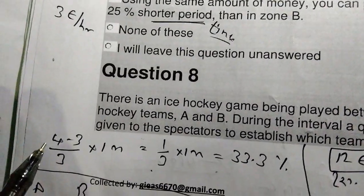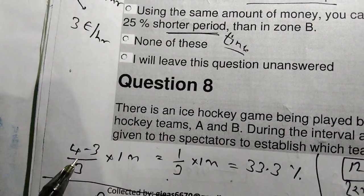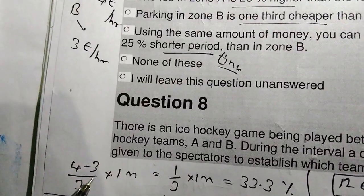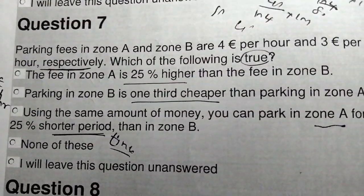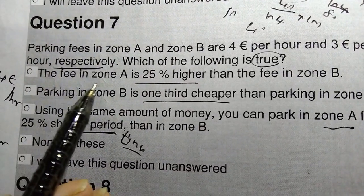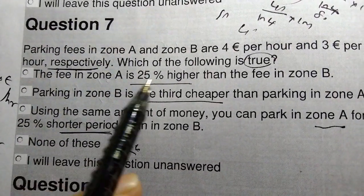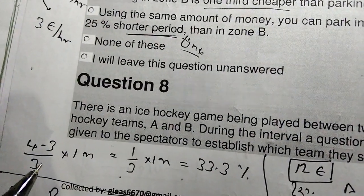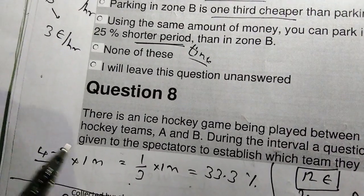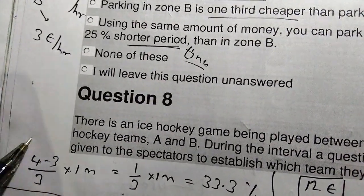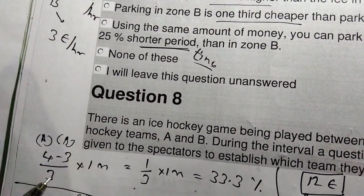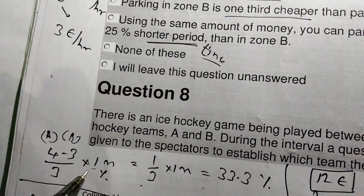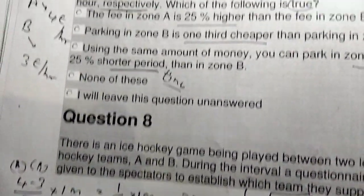The difference is one euro, zone B is three euros. To find the percentage: one divided by three multiplied by 100 — the answer is about 33%, not 25%. So the first statement is wrong.